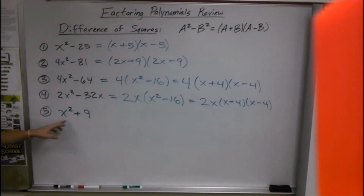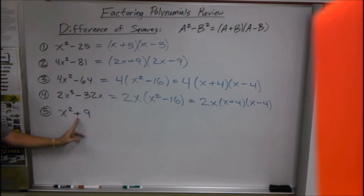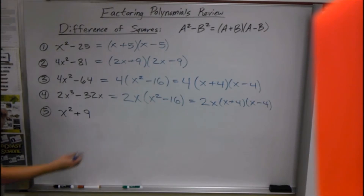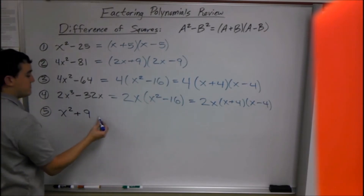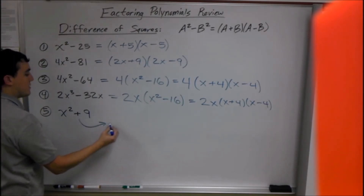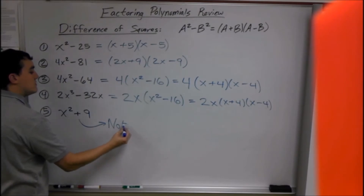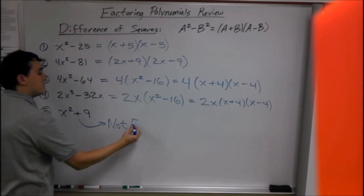And the last one: x² + 9. This is not a difference of squares — it's a sum of squares. You cannot factor these; they are not factorable. Because of the plus, it's not factorable.